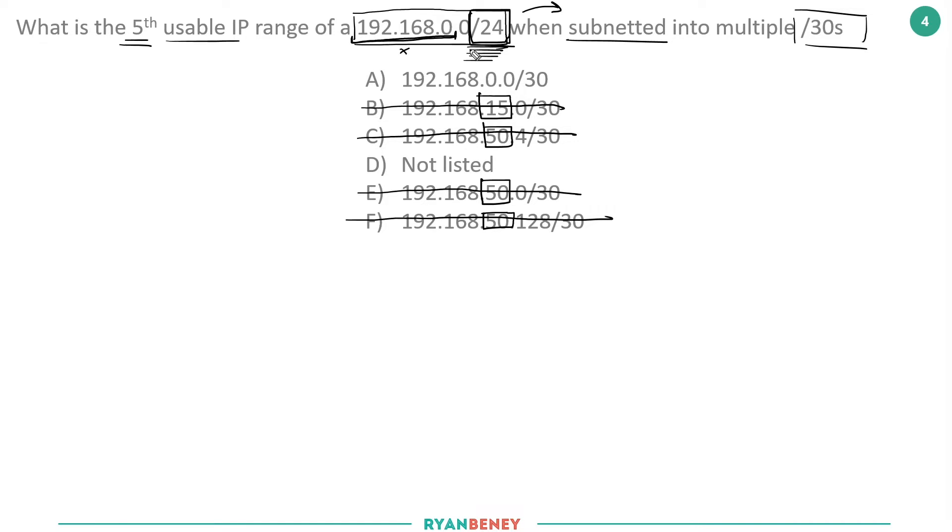We can only go higher, so instantly all of these answers like B, C, E, and F must be wrong because they change the third octet, which is part of those first 24 bits we're not allowed to change. We also know they've asked for the fifth usable IP range, and this top one will be the first usable IP range. So within a couple of seconds, you should instantly be able to identify that the answer is D without even doing the subnetting itself.